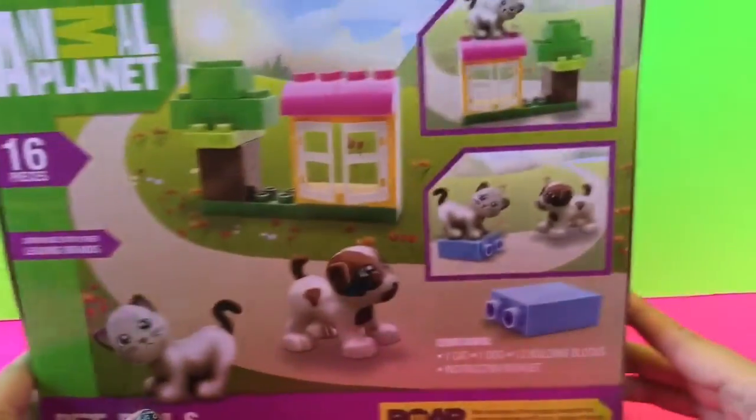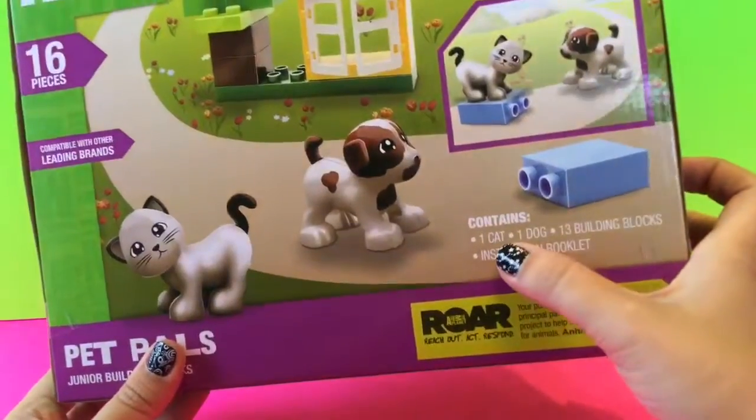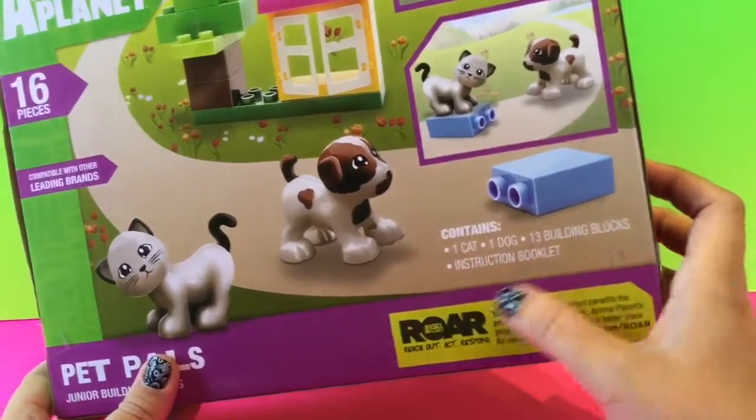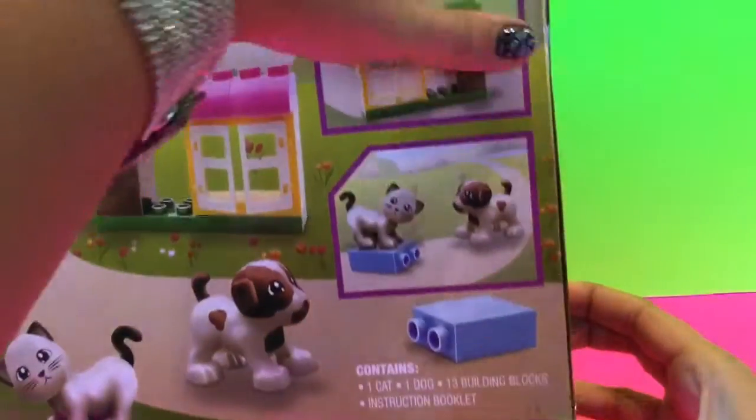It shows all the pieces you get and contains one cat, one dog, 13 building blocks, and an instruction booklet. So we're gonna go ahead and open this.